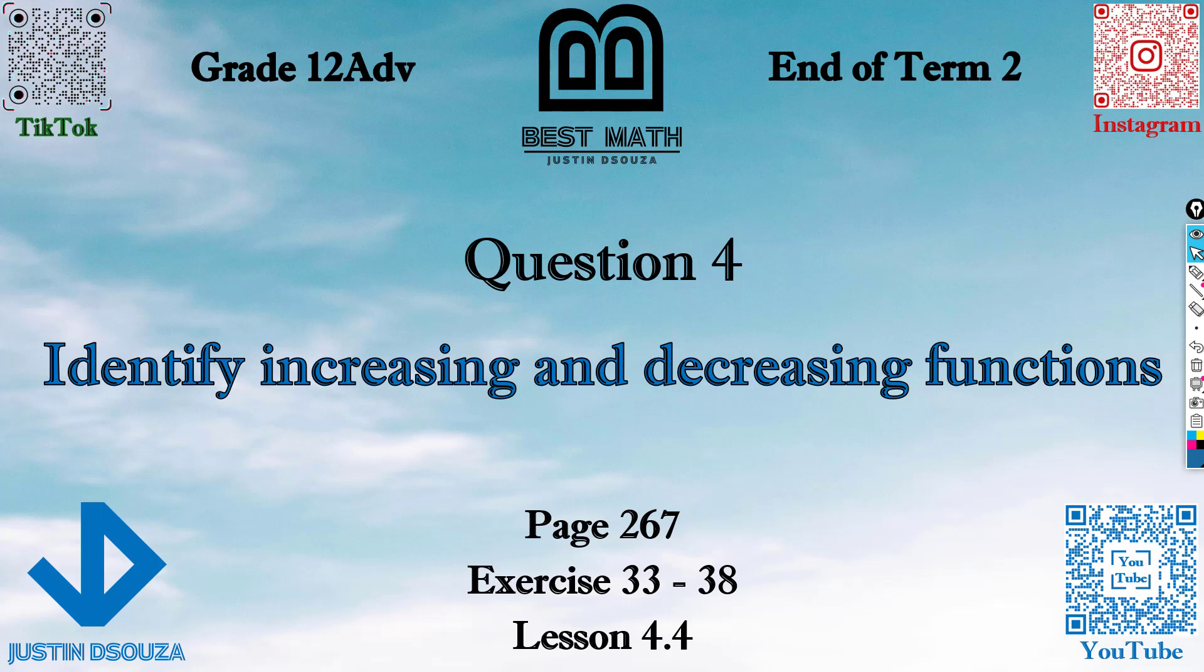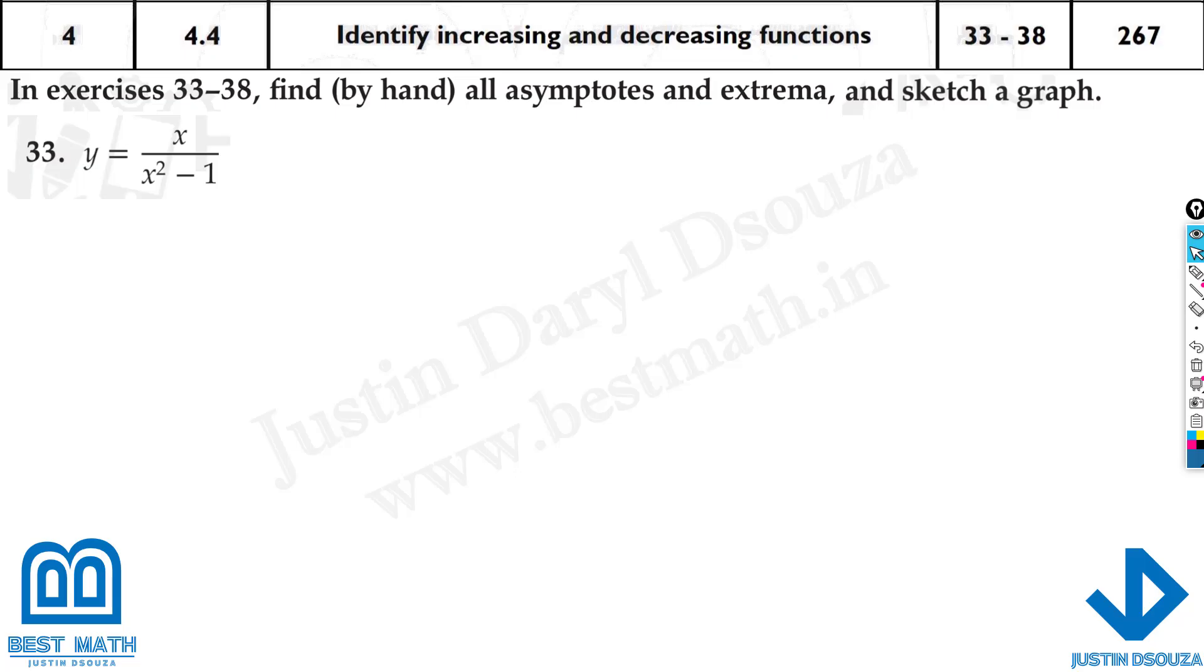Question 4 is about increasing and decreasing functions from Lesson 4.4. This is very similar to question 3, so the same method can be used to solve these problems. Here they are also told to find the asymptotes and extrema which we did last problem, and also sketch a graph. Asymptotes can be found by taking limits.